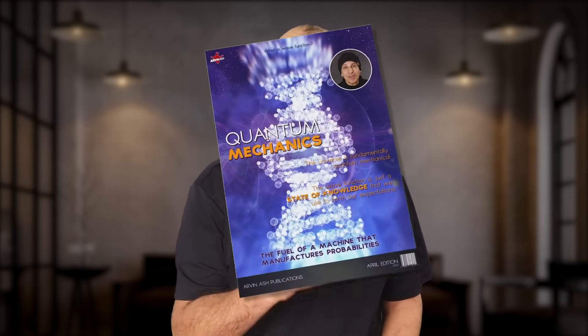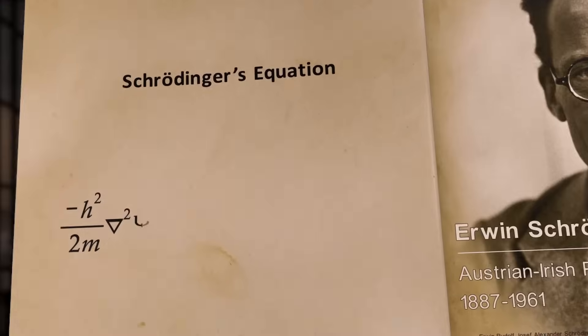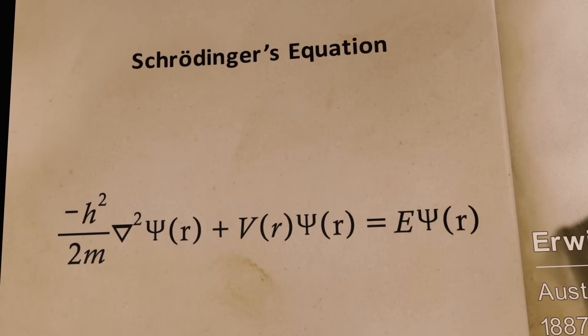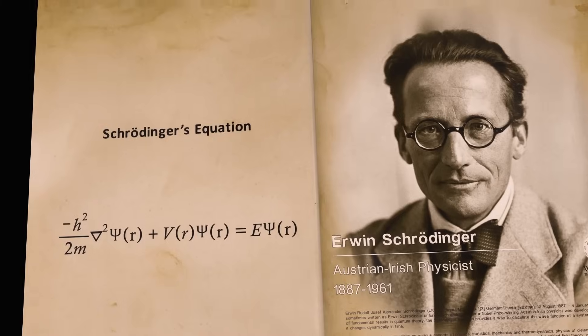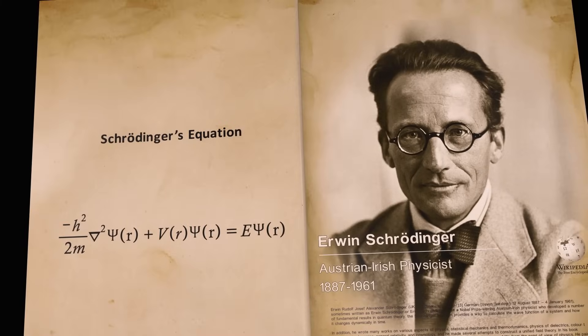If we want to understand quantum mechanics, we have to start with the math. Because that's where the heart of the theory lies. But don't worry, I'm not going to derive any equations, just describe them. Arguably, the most important quantum equation was figured out in the mid-1920s by Austrian physicist Erwin Schrödinger.